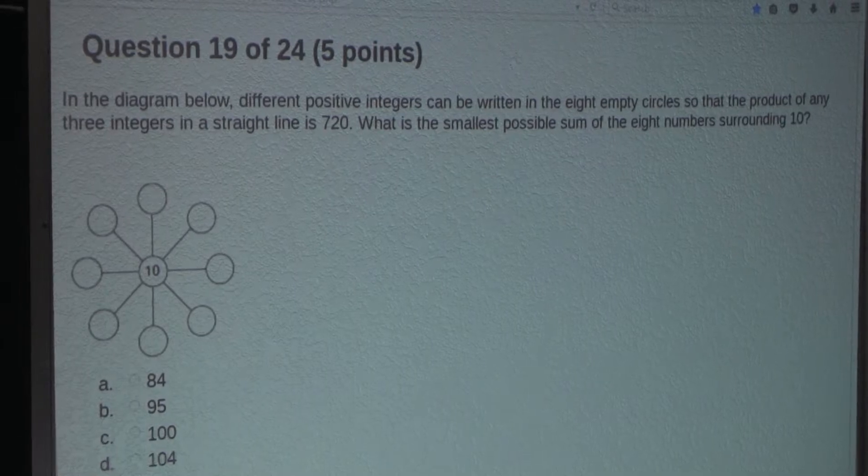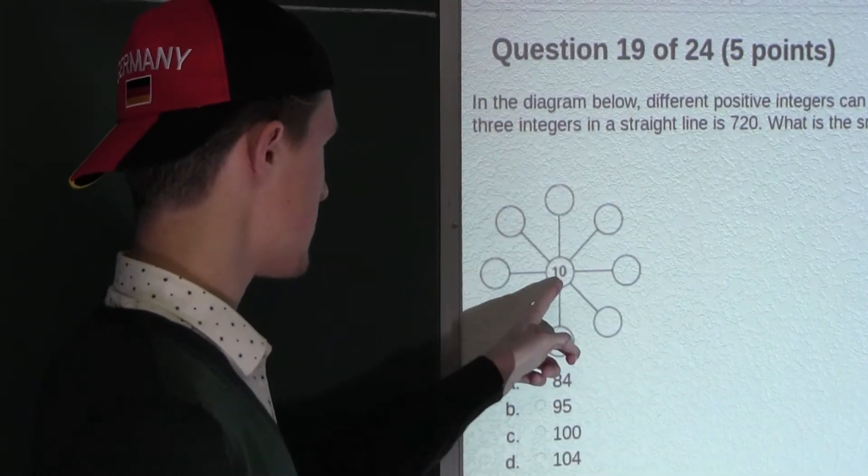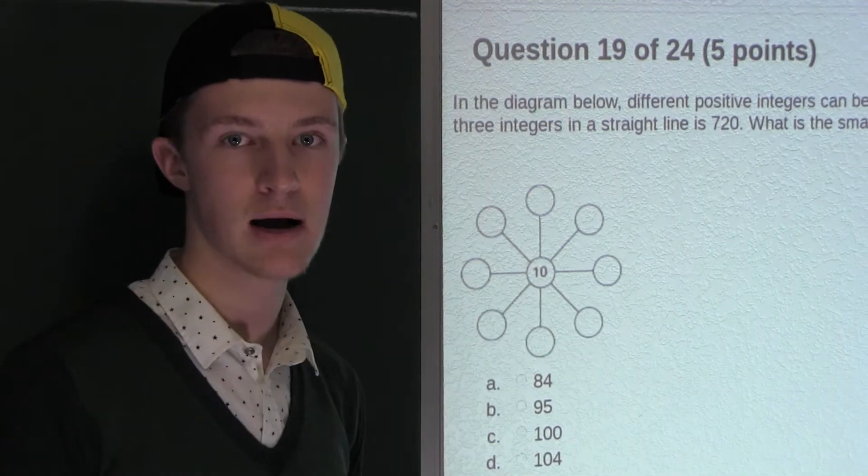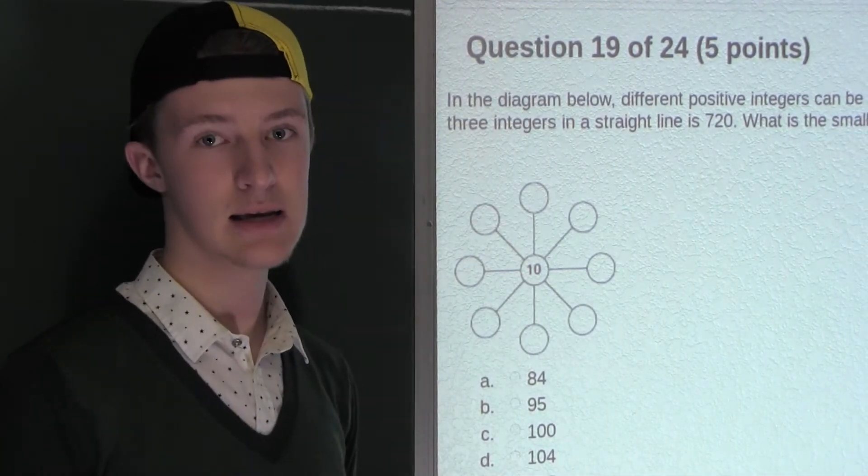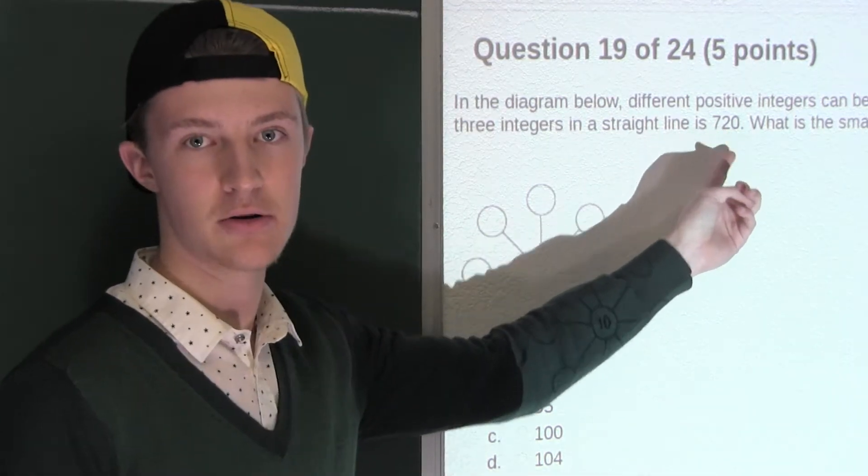Now from the question we know that there are 8 numbers that surround 10. That means we will have 4 products, and each of those 4 products must be 720.